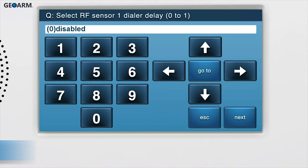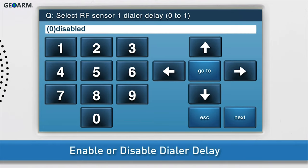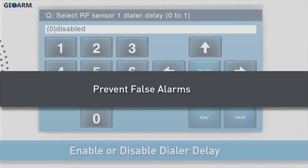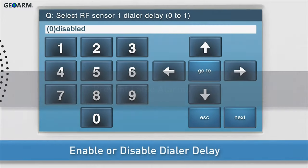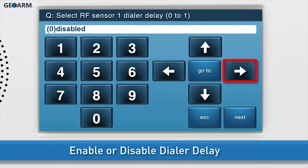Choose whether to enable or disable the dialer delay. The dialer delay is used to help prevent false alarms. To enable the dialer delay, use the right arrow to select option 1. To disable the dialer delay, leave option 0 disabled. Once the desired option displays in the answer box, press the down arrow to go to the next sub-question.